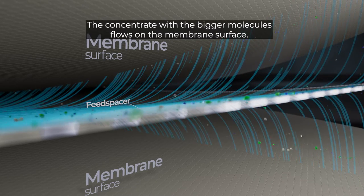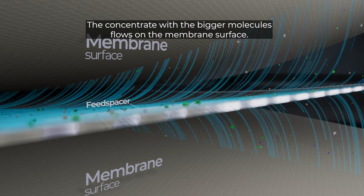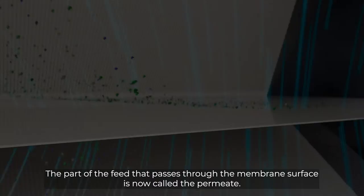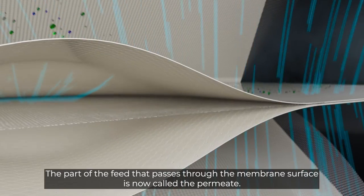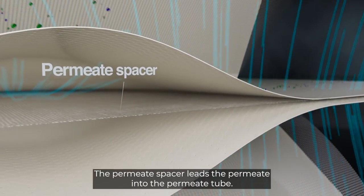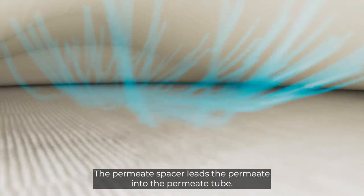The concentrate with the bigger molecules flows on the membrane surface. The part of the feed that passes through the membrane surface is now called the permeate. The permeate spacer leads the permeate into the permeate tube.